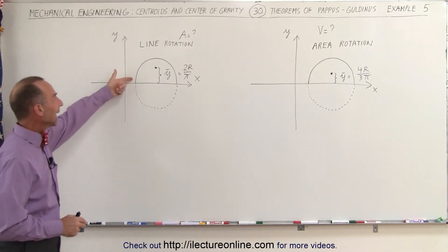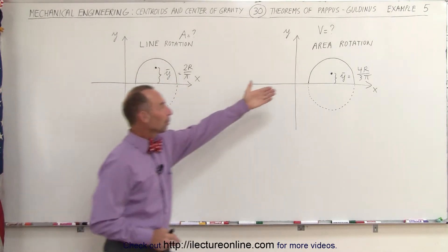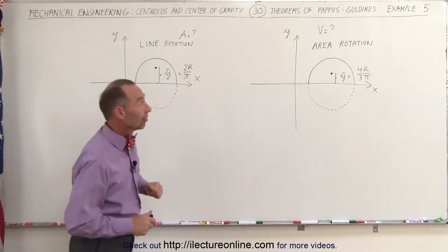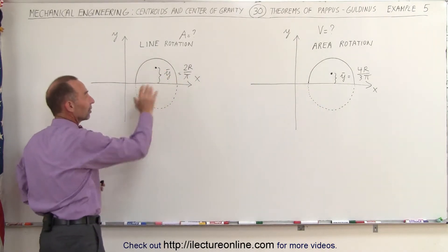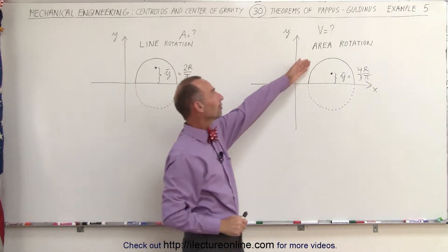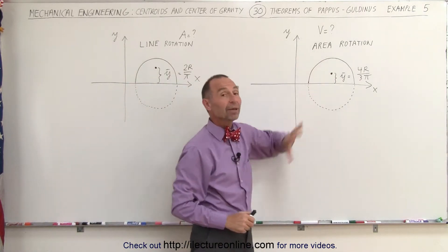One where we rotate a line, one where we rotate an area about an axis. In this case, we're going to be able to find the surface area of what we end up with. Here, we're going to find out what the volume is.